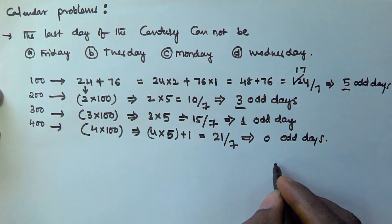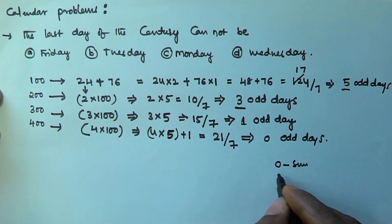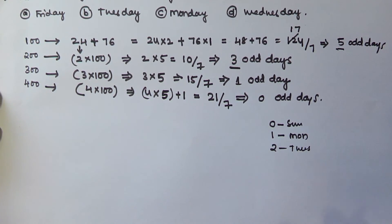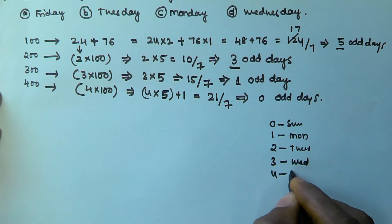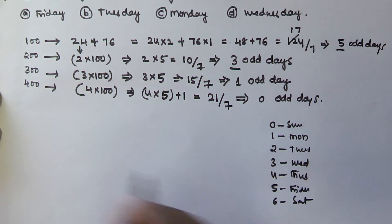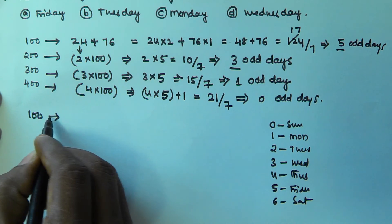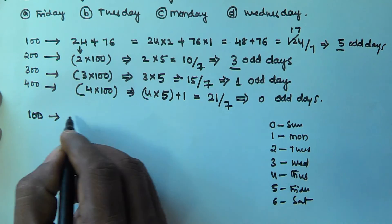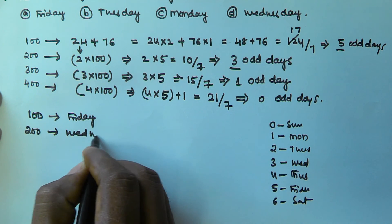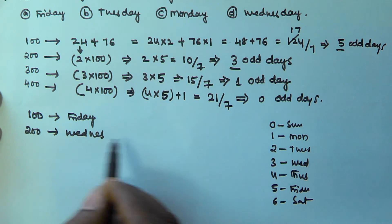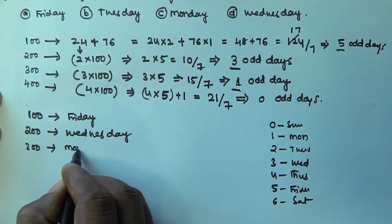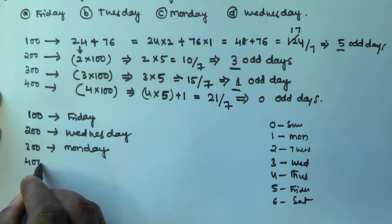The day mapping is: 0 = Sunday, 1 = Monday, 2 = Tuesday, 3 = Wednesday, 4 = Thursday, 5 = Friday, 6 = Saturday. So: 100 years has 5 odd days → last day is Friday. 200 years has 3 odd days → last day is Wednesday. 300 years has 1 odd day → last day is Monday. 400 years has 0 odd days → last day is Sunday.